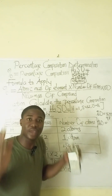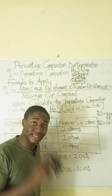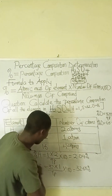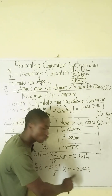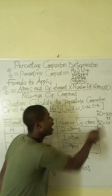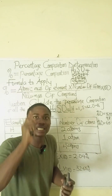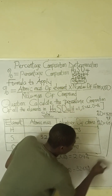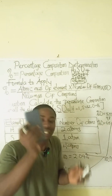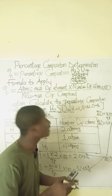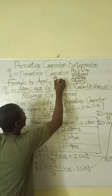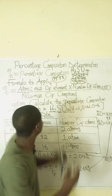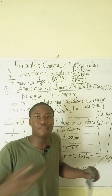After calculating, the percentage compositions are: hydrogen = 2.04%, sulfur = 32.65%, and oxygen = 65.31%. It must be noted that all these percentages must add up to 100%. You may get 99.9%, which is still approximately 100%.